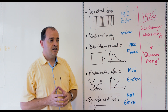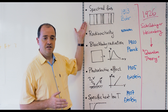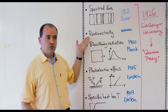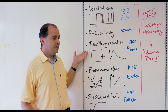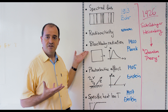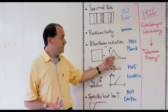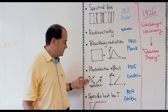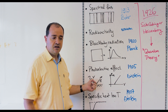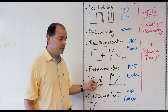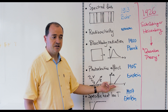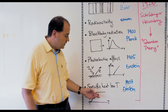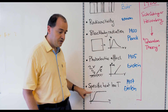The most important ones are the existence of spectral lines in the emission or absorption of some light sources, radioactivity as discovered by chance, the blackbody radiation that describes the thermal radiation of a body at a given temperature that could not be explained by classical physics, the photoelectric effect that describes the emission of an electron when a photon hits a metallic surface and had a behavior in energy that is unexpected, and also the behavior of specific heat at low temperature, where it was observed to deviate from the classical prediction that is a constant.